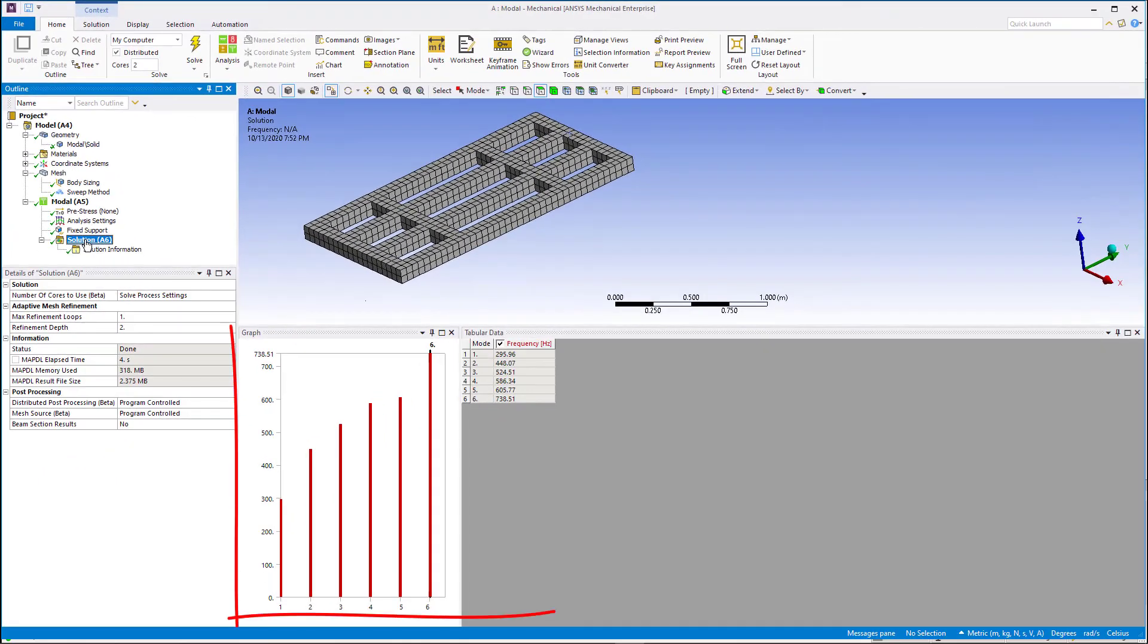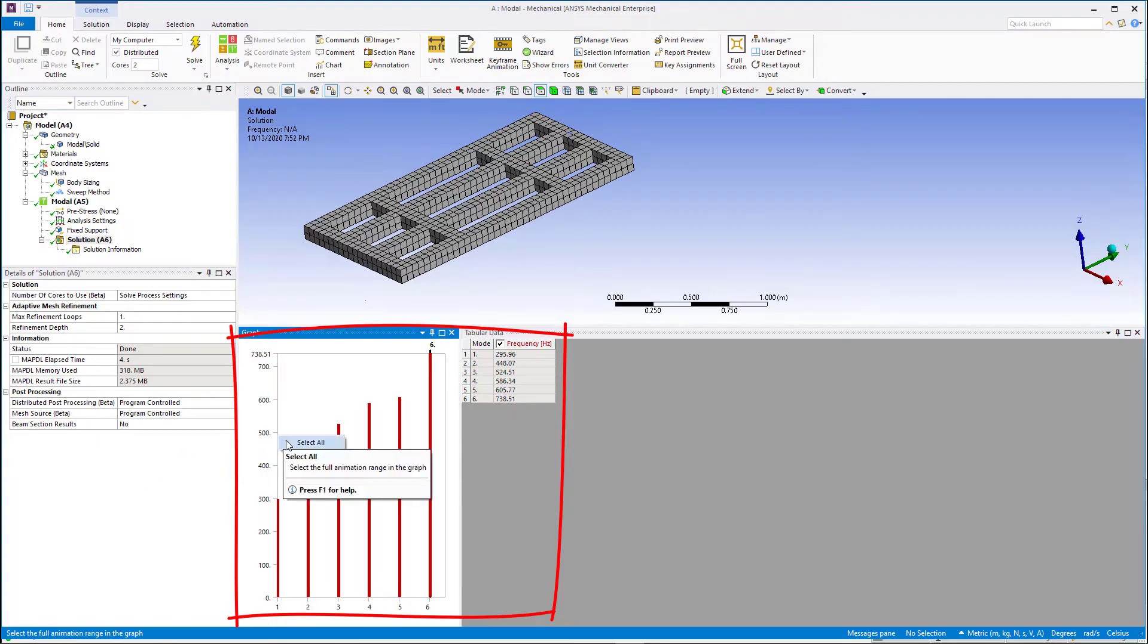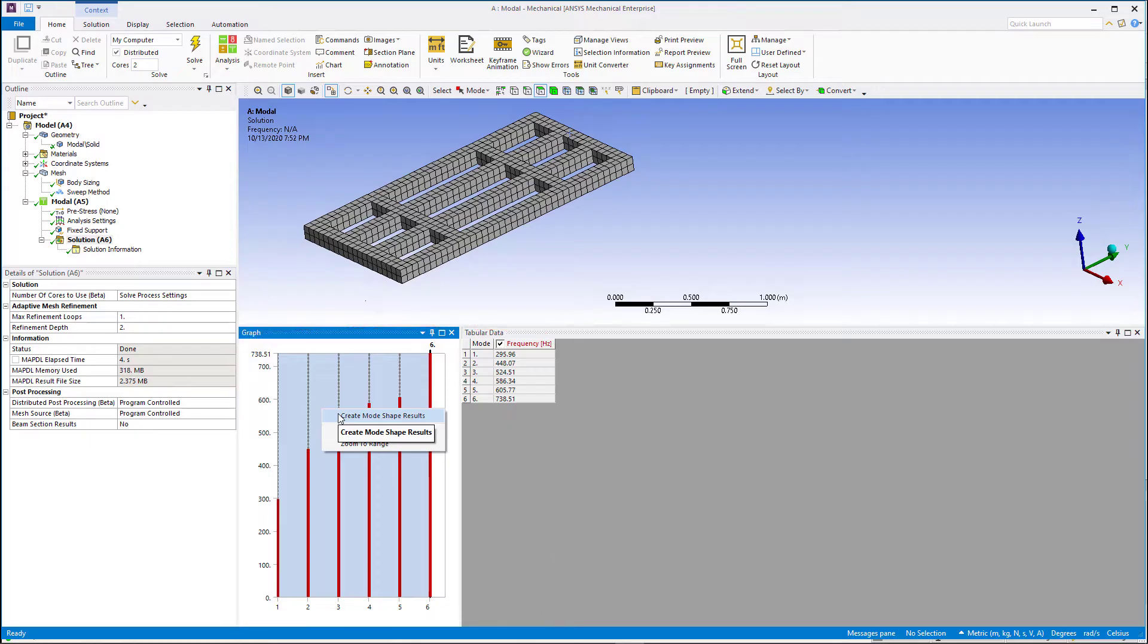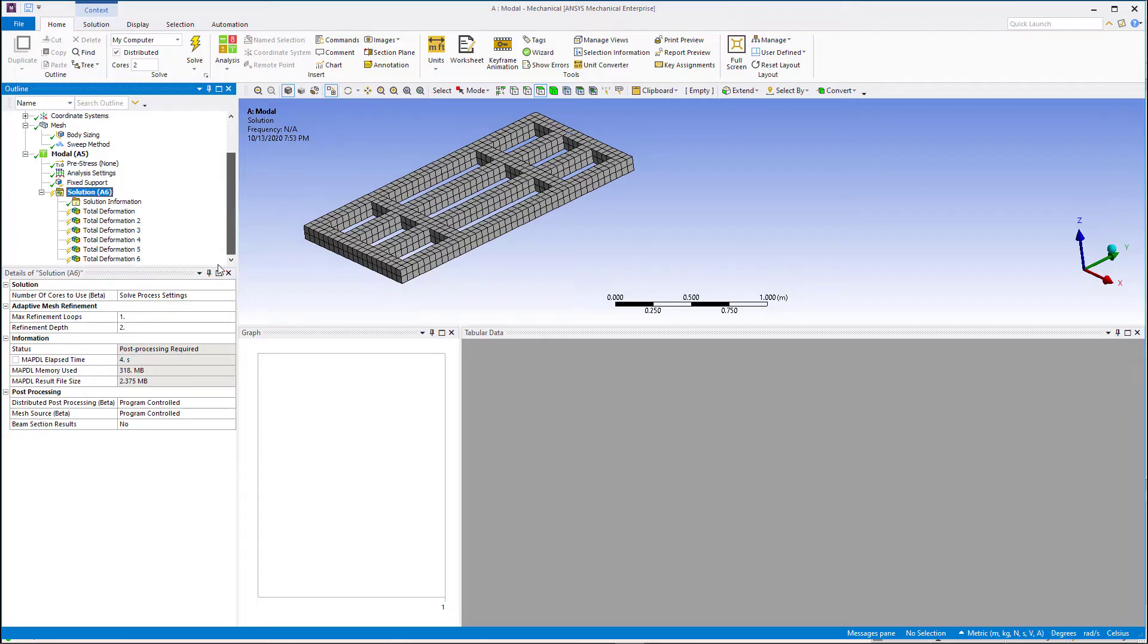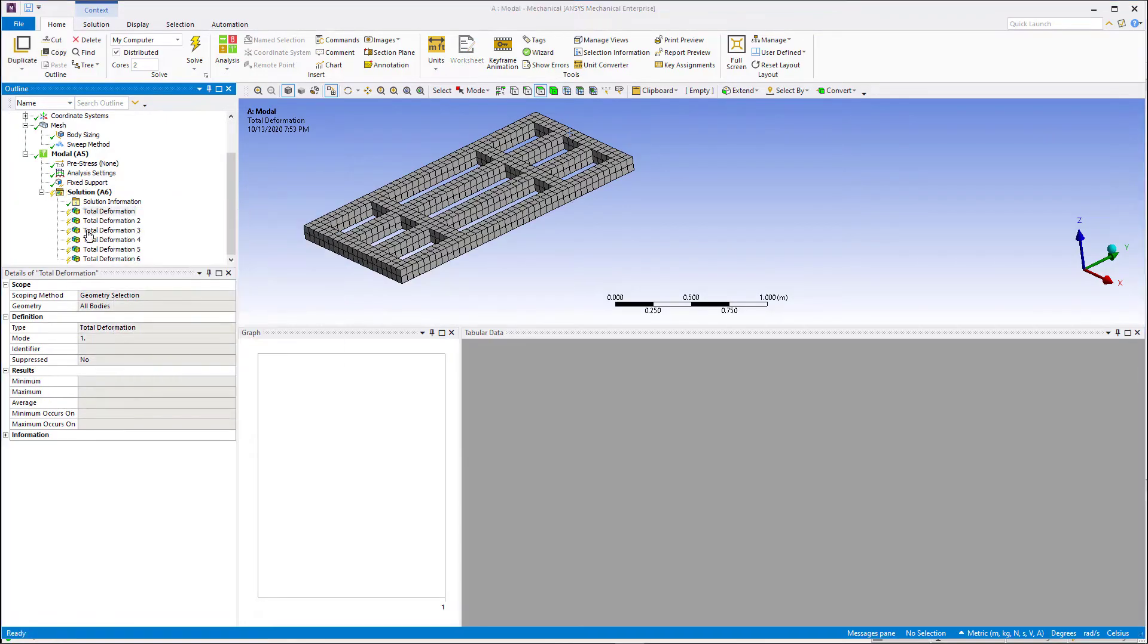Once you get a solution, the table of mode numbers and frequencies is available. Right-click and select all. Right-click and create mode shapes. Notice that six total deformation results are inserted in outline tree automatically.